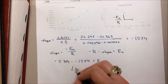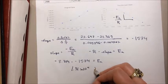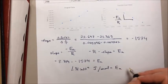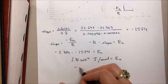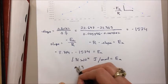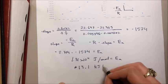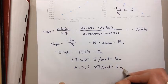We get 1.31 times 10 to the fourth joules per mole equals the activation energy, or plus 13.1 kilojoules per mole is our activation energy.